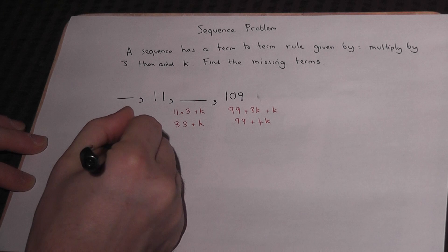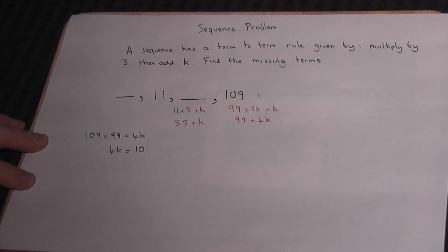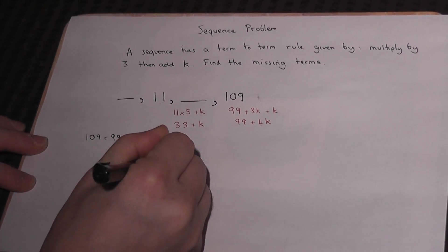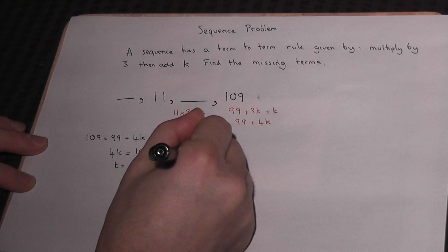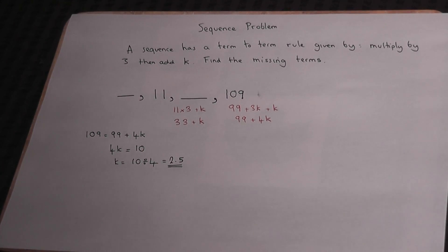So 4k must equal 10, which means that k must equal 10 divided by 4, which is 2.5. So k is 2.5.